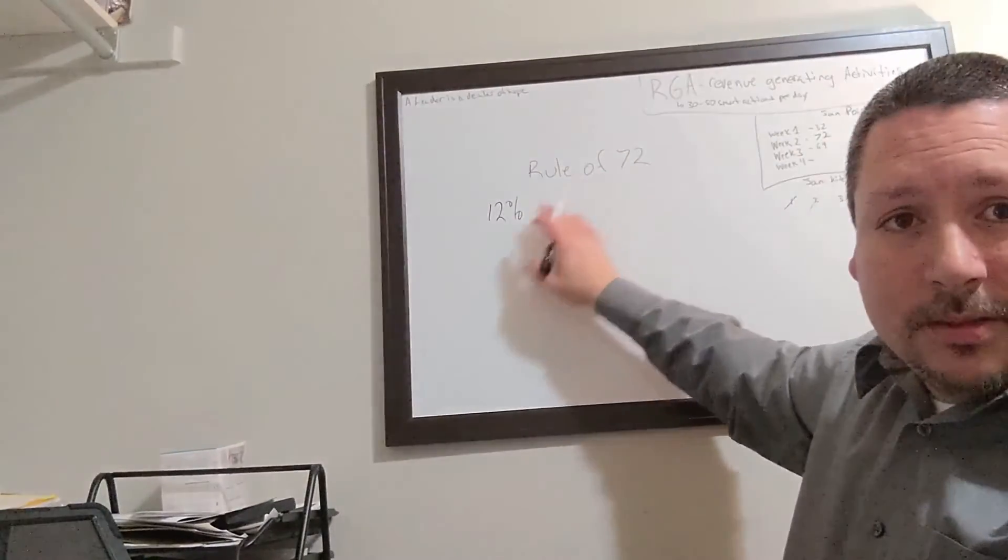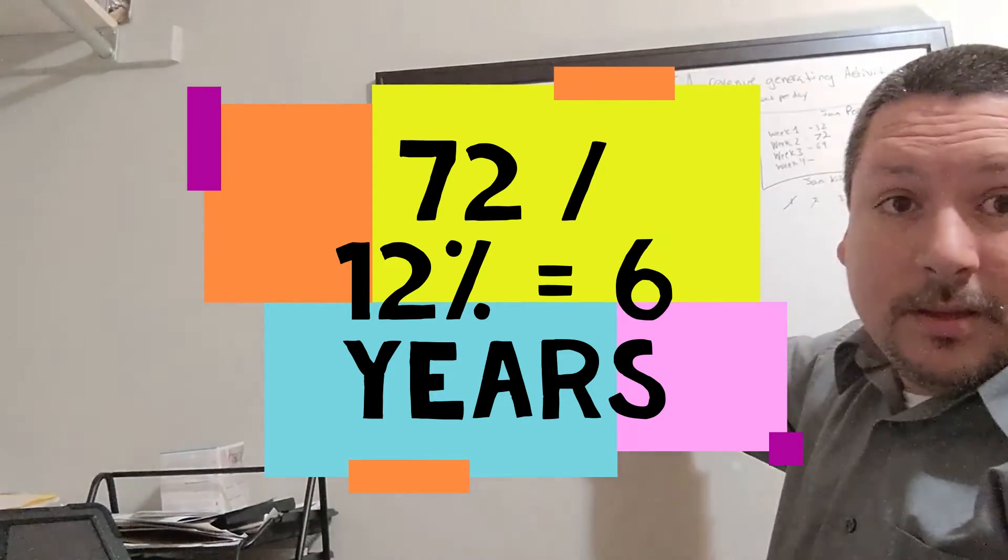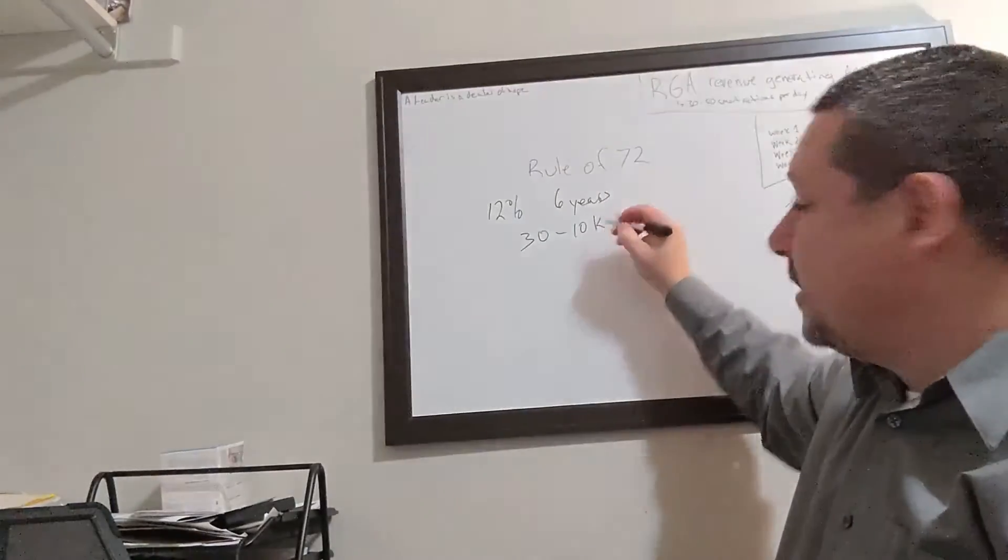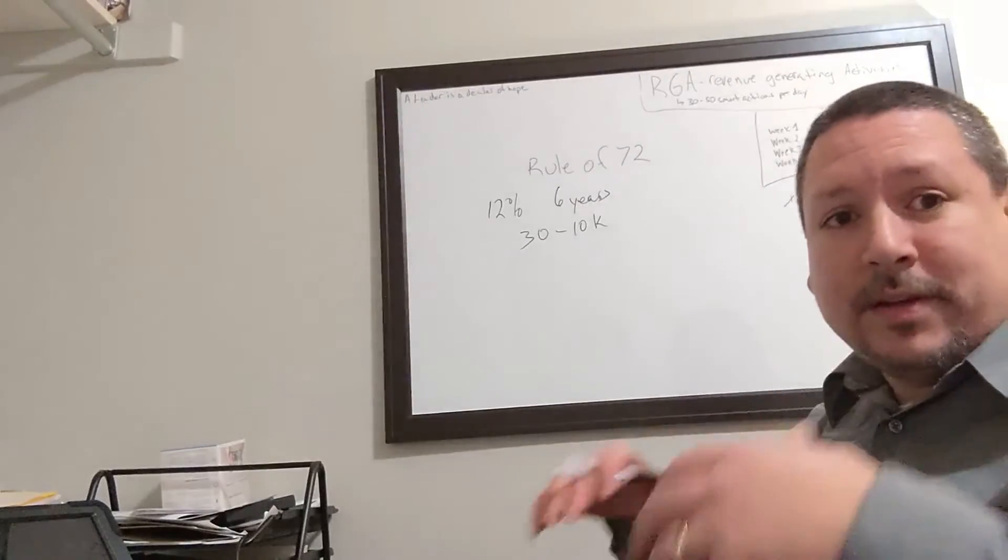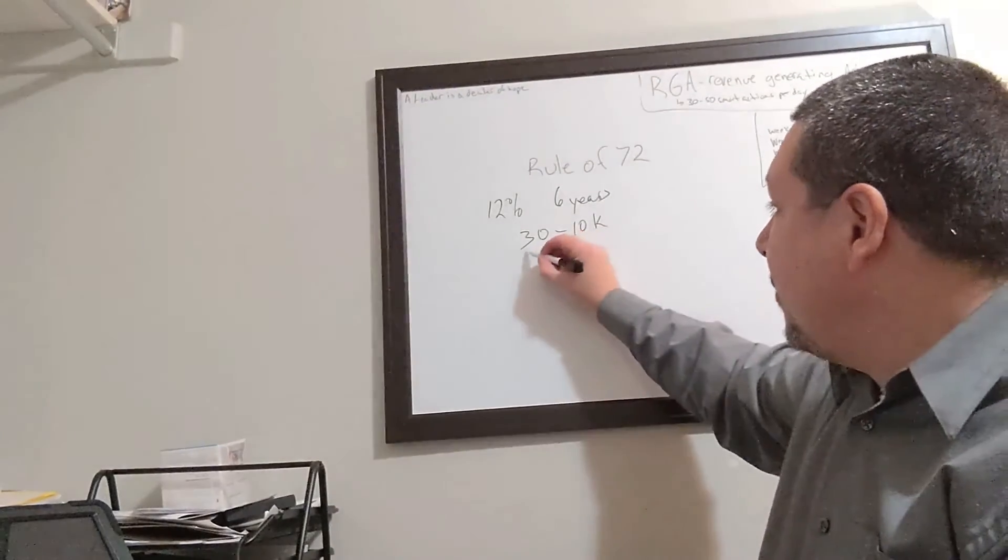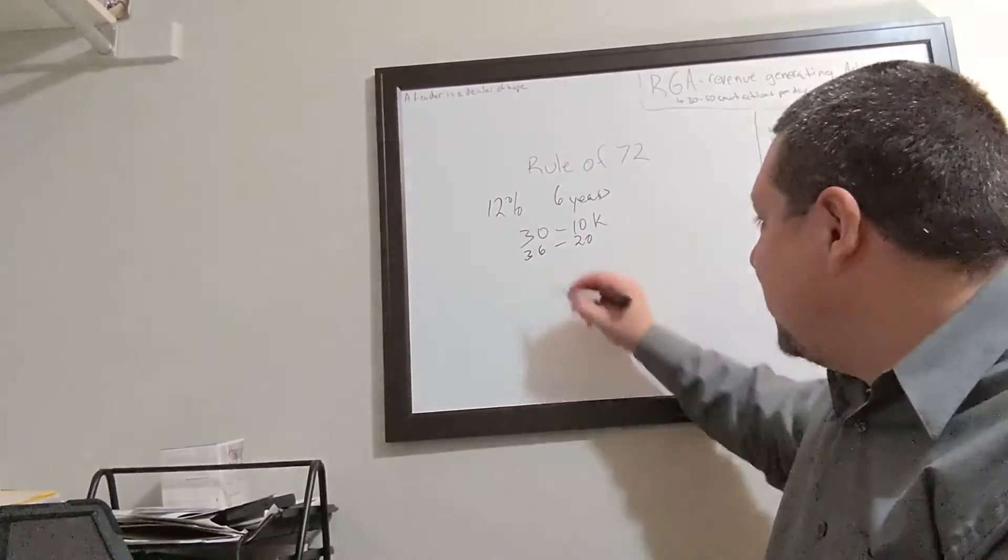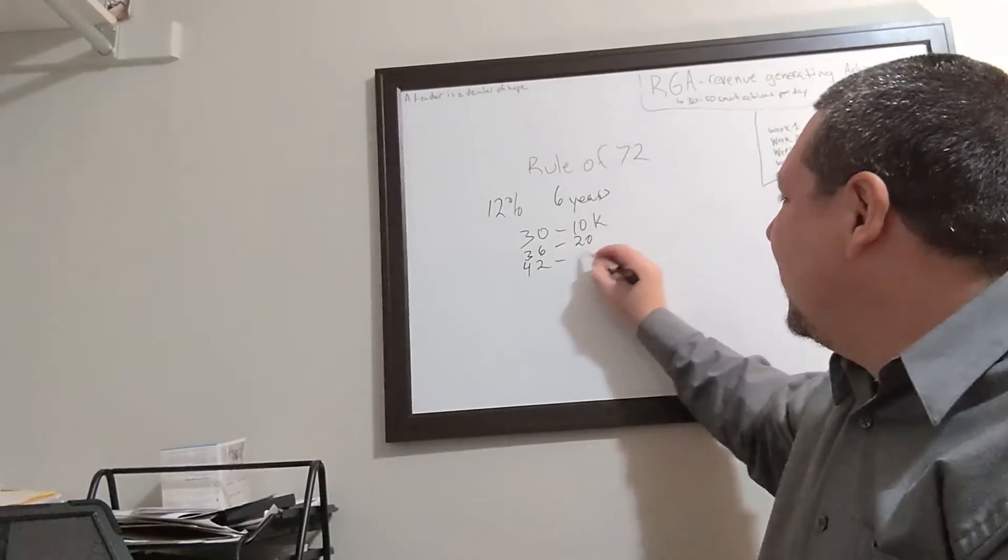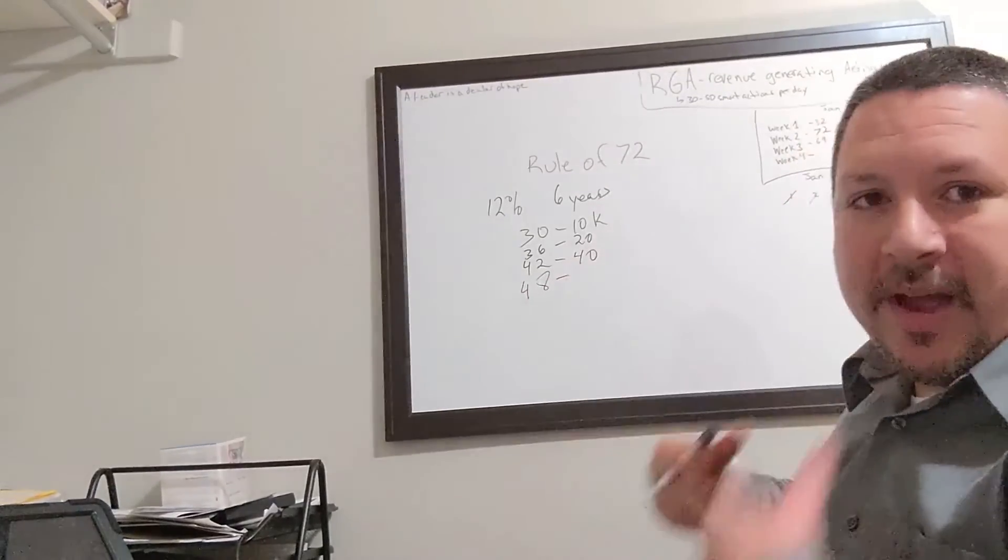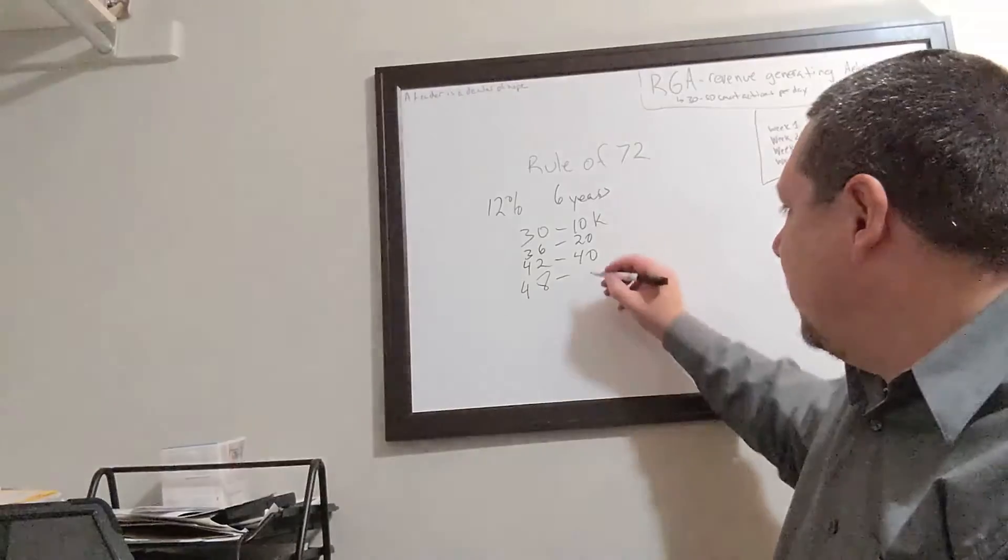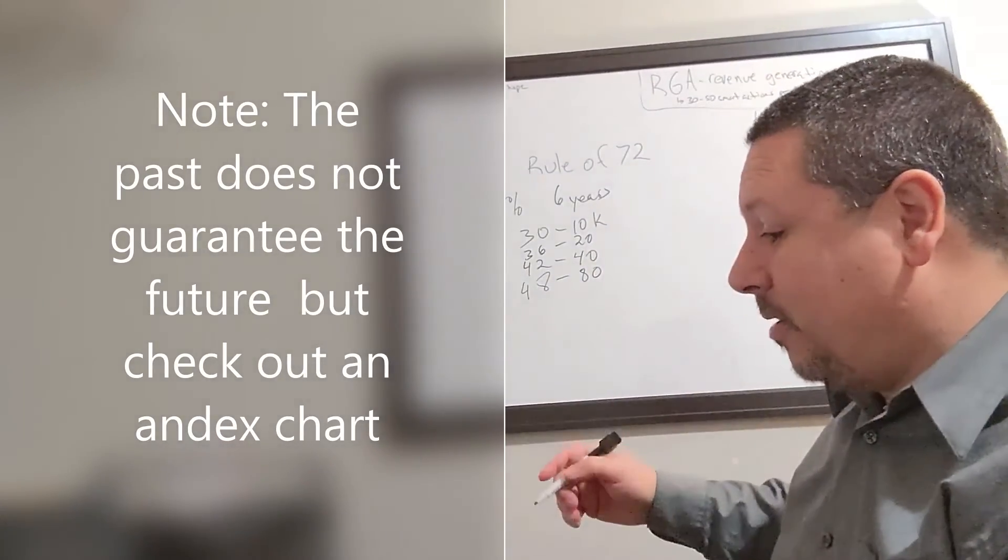So 72 divided by 12 works out to 6 years. At 30 years old we put in $10,000—by the way, this is not adding anything, just put in the 10 grand, leave it, and let it ride. At 36 you have $20,000, at 42 you have $40,000, at 48—notice the power that starts to happen as you get a better return—you have $80,000.